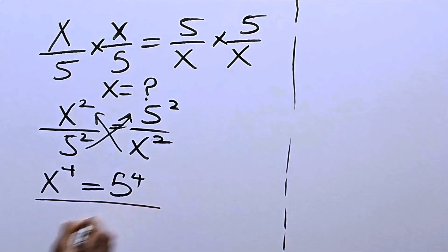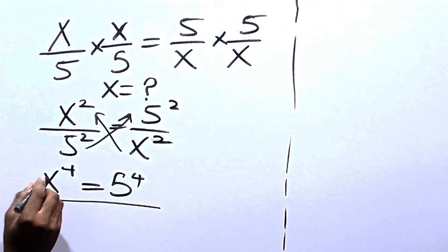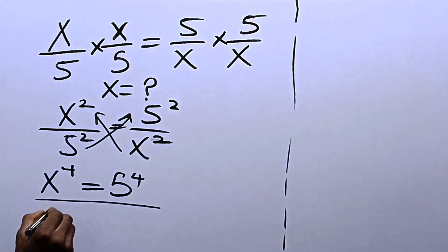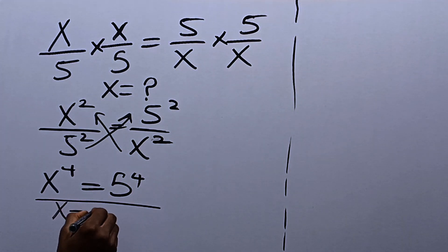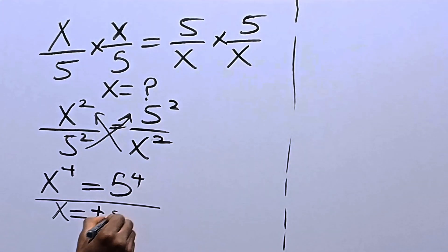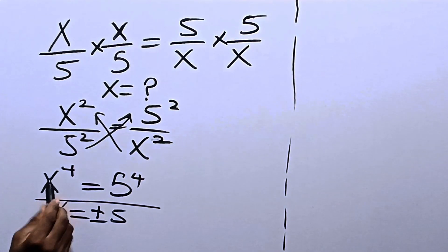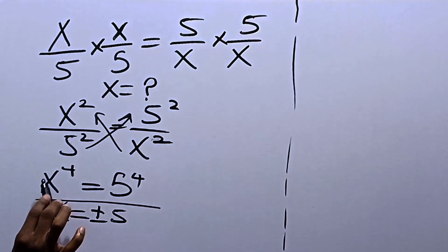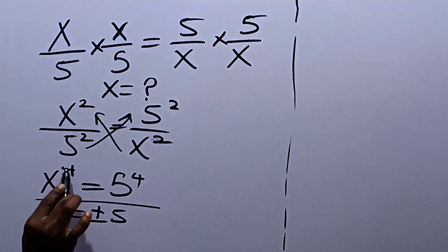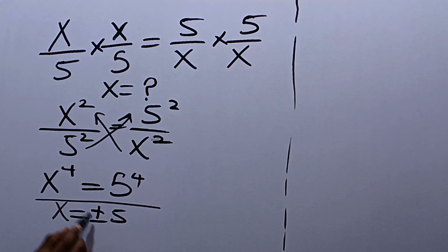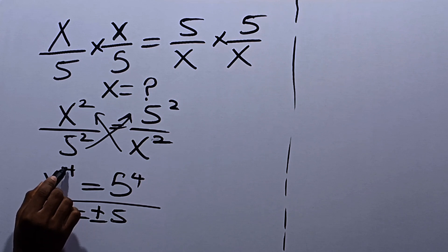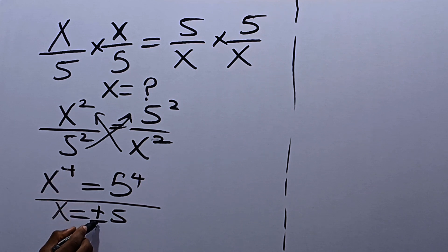Solving this, you can see that x is equal to plus or minus 5. Reason being that if you cancel out the powers, you have plus 5, and since the power is even, you can also have minus 5.